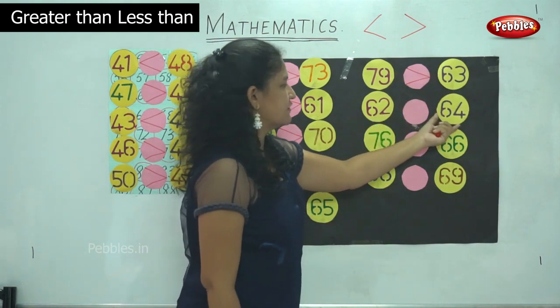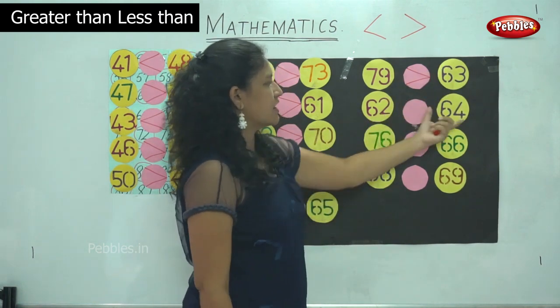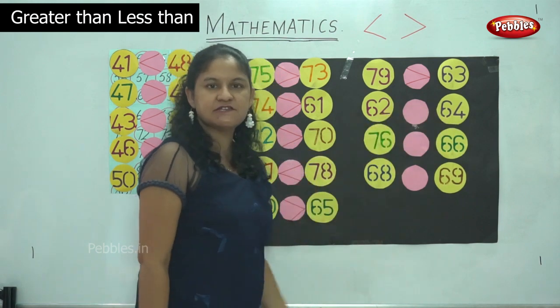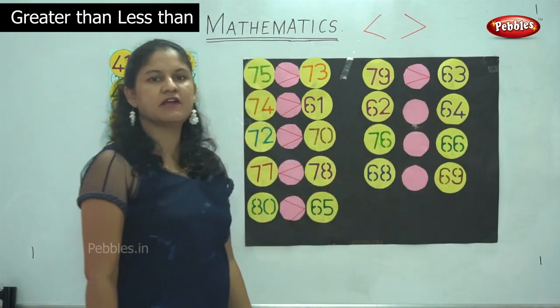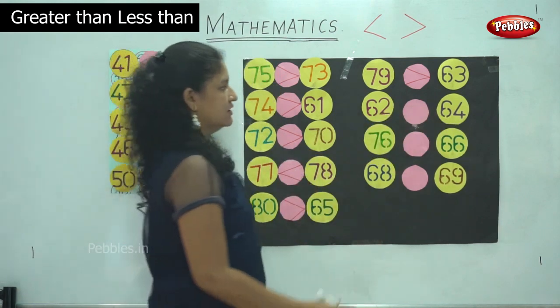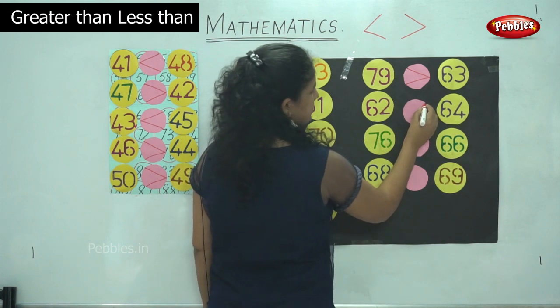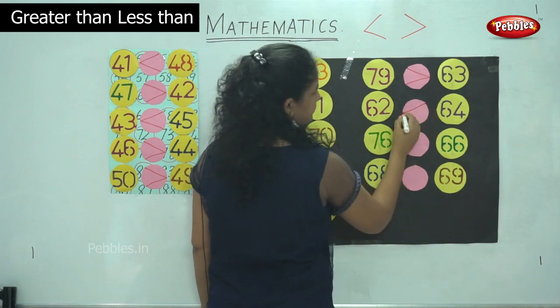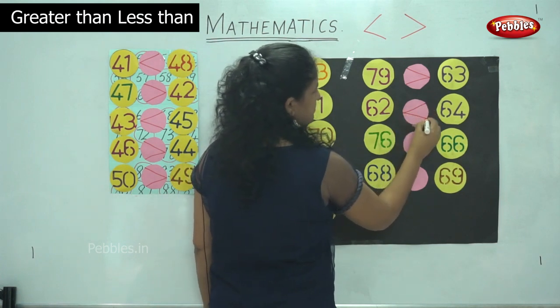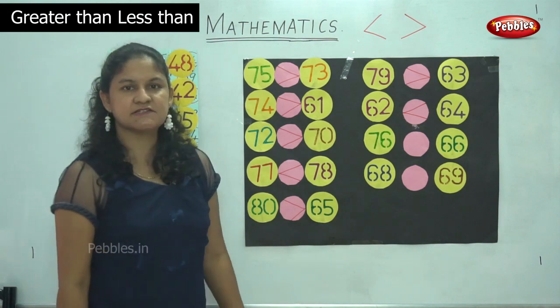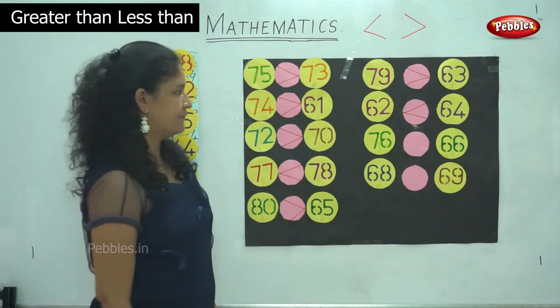Next we have 62 and 64. When you compare these two numbers, 64 is the bigger number, so we put the sign and it is read as 62 is lesser than 64.